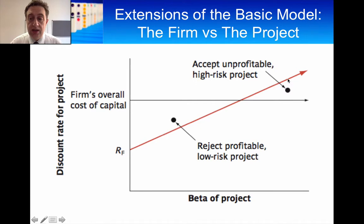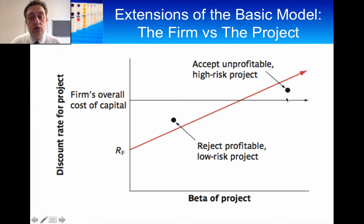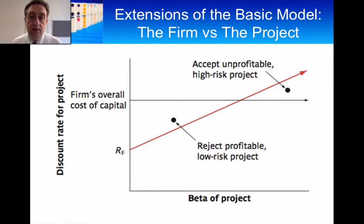Similarly, for a very high risk project, the CAPM would predict that the cost of capital should be above the return, so you would reject this project if you use the CAPM cost of capital. However, if you use the firm cost of capital, you would accept it. You can see that you're getting different outcomes when you just use a corporate cost of capital, and that's what you need to be very careful about.